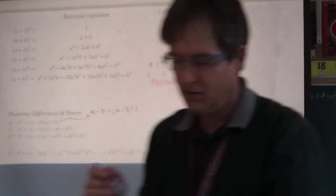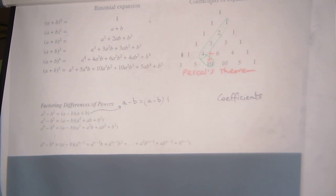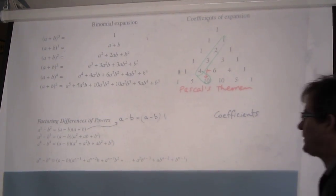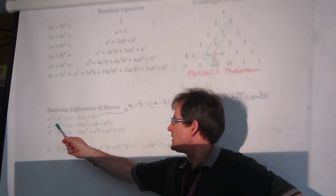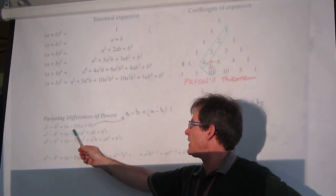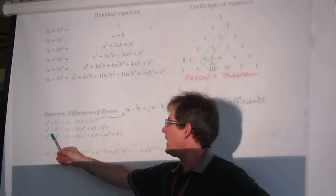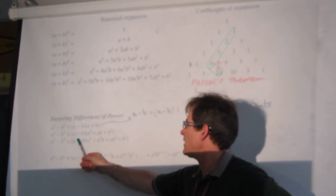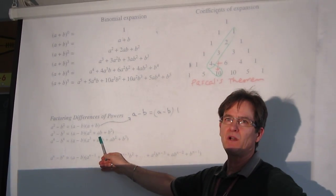Now let's look at a similar situation: factoring differences of powers. a² - b² you know is (a-b)(a+b). a³ - b³ you might know is (a-b)(a²+ab+b²), and so on.